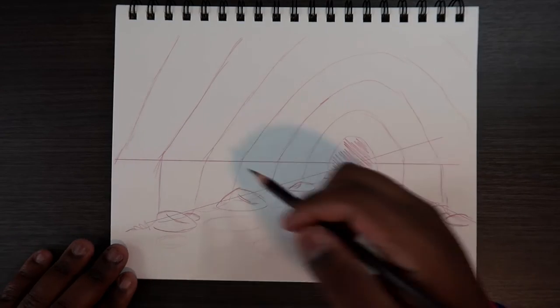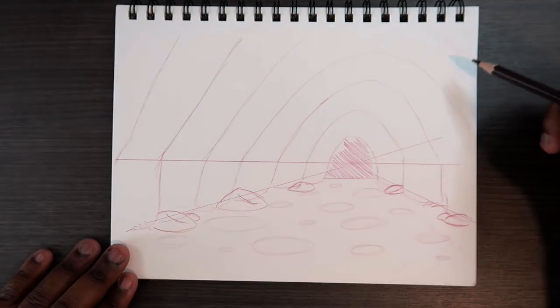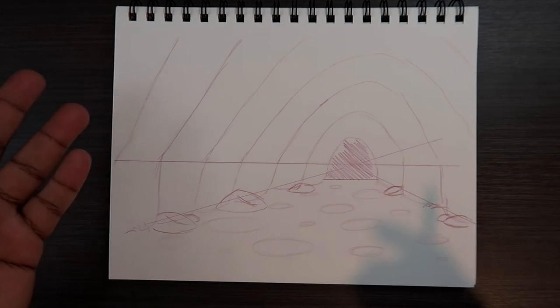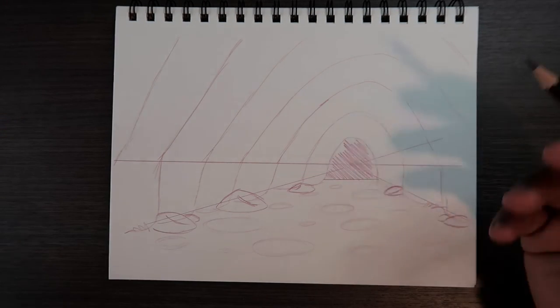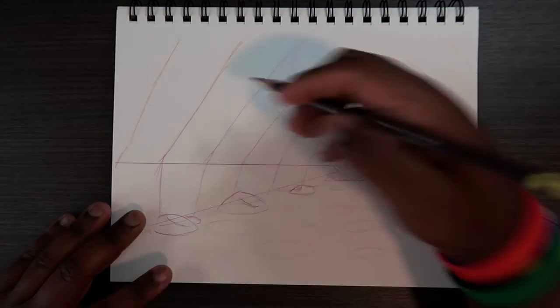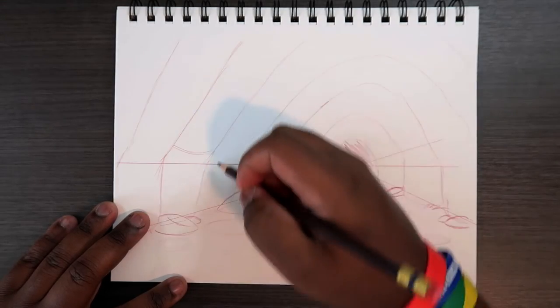But before I do that, I'm going to alter this shape a little bit. Because the walls of this cave, we can change to make it look like rocks. Or you can leave it just like this and include some stalactites and stalagmites up in the ceiling and at the bottom, wherever. But I'm going to change these into rock.